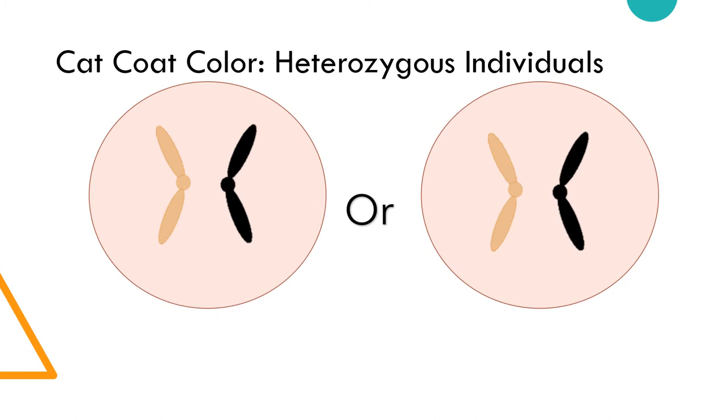This is because during development, each of the cat's cells will randomly deactivate either the X chromosome containing the allele for black coat color, X^B, or the one containing the allele for yellow coat color, X^b.